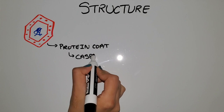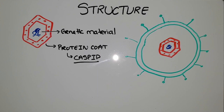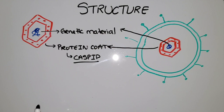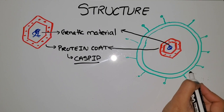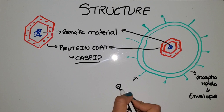A step up from the simple structure is one where the capsid is enveloped in another layer made out of phospholipids. Remember that cell membranes are also made of phospholipids, and this is very important when a virus is trying to enter a cell — it can simply fuse itself to the membrane. This layer is called an envelope. In addition to the phospholipids, we also have glycoproteins that are part of the envelope and allow for recognition when trying to enter a host cell.